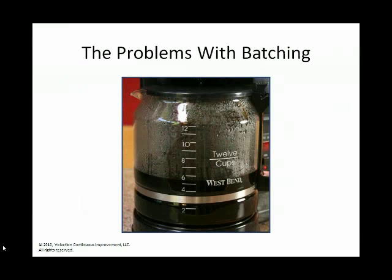A great example I'm always reminded of is the Shingo Prize winning Toast Kaizen video, where they go through the ways of identifying how, in the process of making toast, the customer wanted a different type of toast than the person made. This is the same kind of approach — what is it that we're after when we're brewing this cup of coffee? And that's one of the main problems with batching. If you look at this cup of coffee, there's five and a half cups left, but it's a particular type of bean — and obviously there's a problem with that.